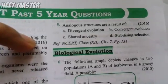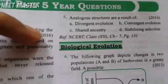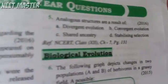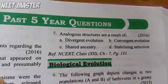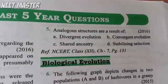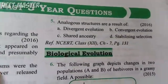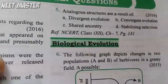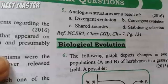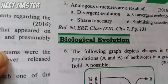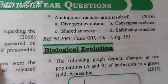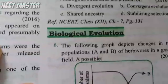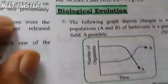Analogous structures are the result of convergent evolution. For example, the wing of a butterfly and a bird — they cannot perform the same function via the same origin. The answer is convergent evolution.